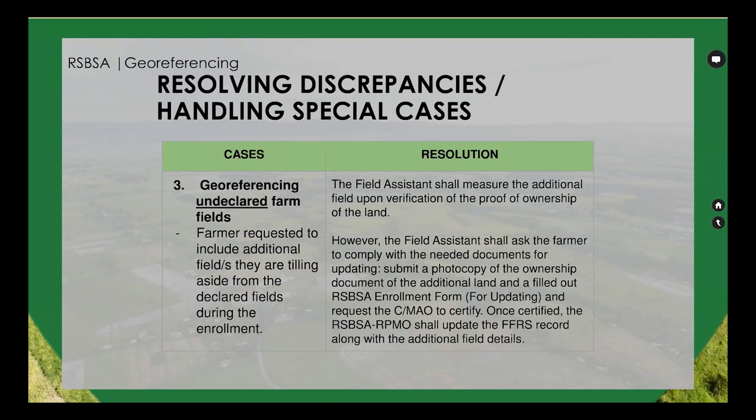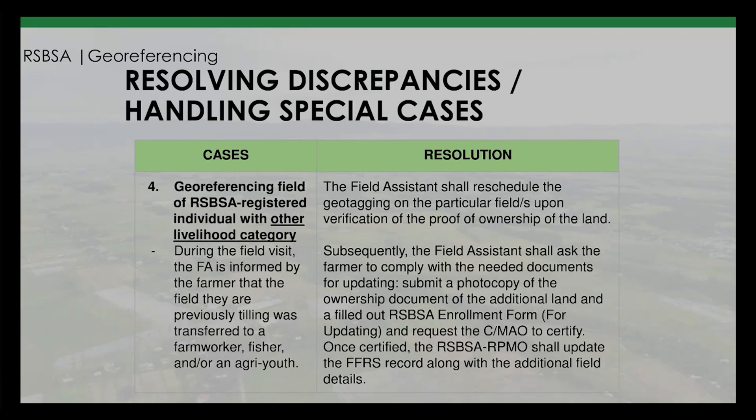The farmer must also submit a filled-out RSBSA enrollment form for updating and request the C/MAO to certify it. Once certified, the RSBSA RPMO shall update the FFRS record along with the additional field details.